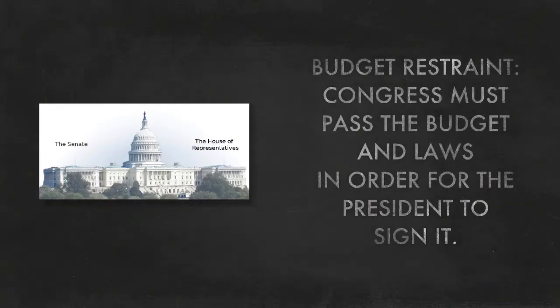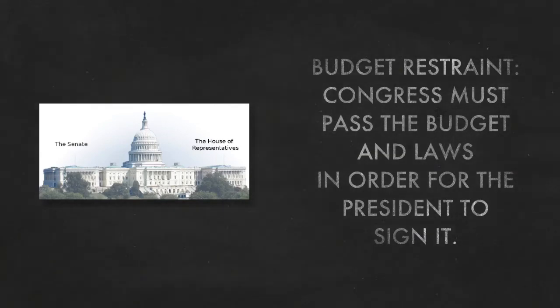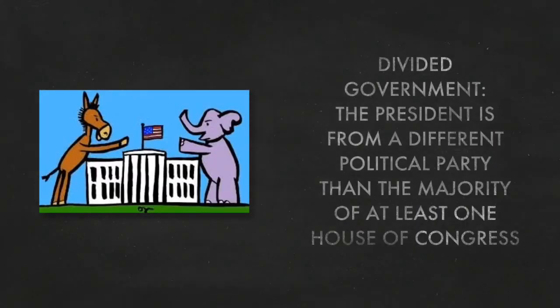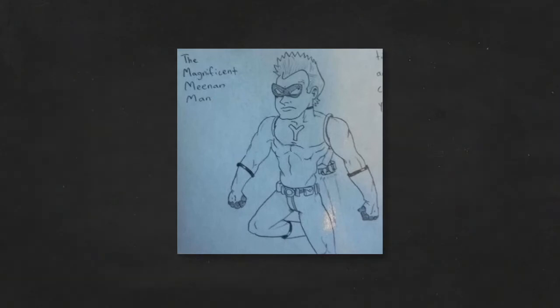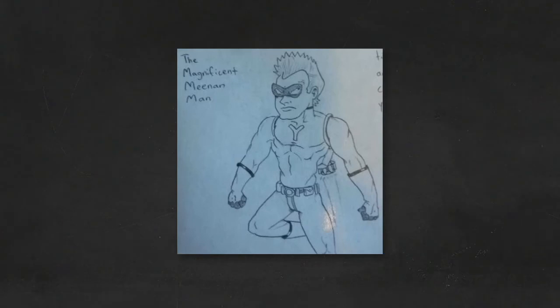Budget restraint is also a challenge. Congress must pass the budget laws in order for the president to sign them, so the president needs allies in Congress or else they can't get things done that they want. Divided government is when the president is from a different political party than the majority of at least one house of Congress. As you can see, the president has a lot of constitutional power that helps them shape policy, but they still have many obstacles they must face.